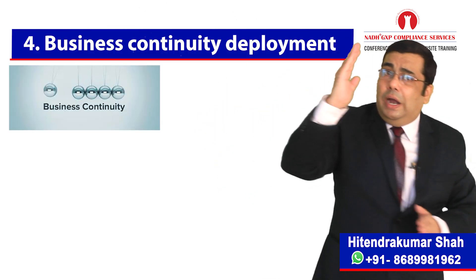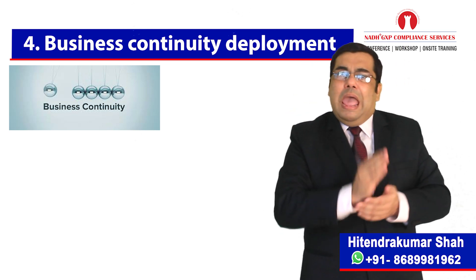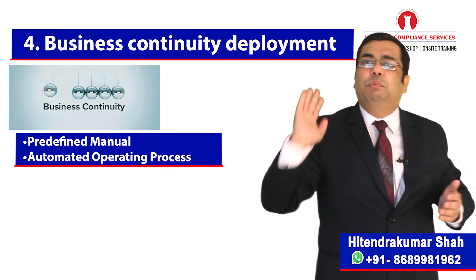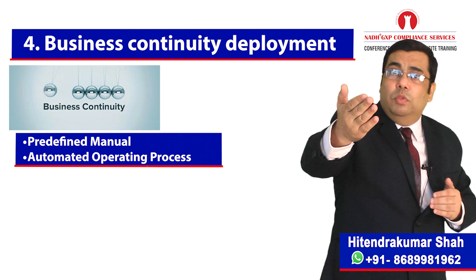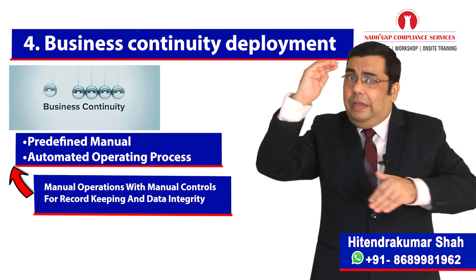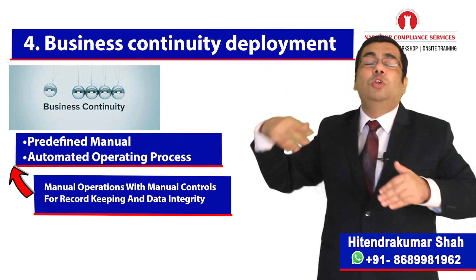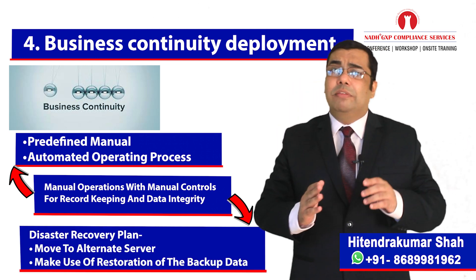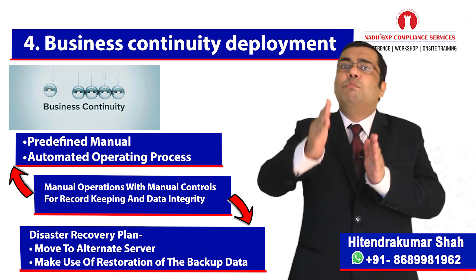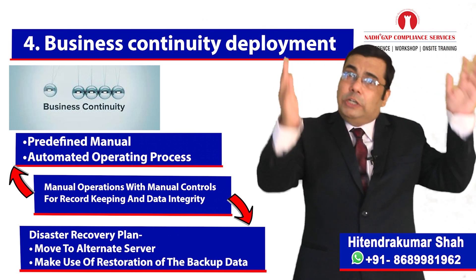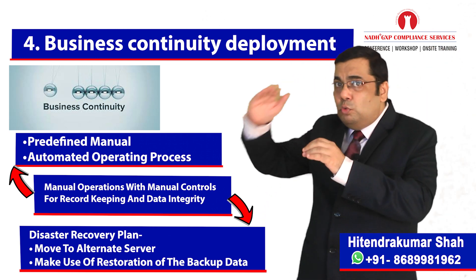The fourth element is business continuity deployment. Under this element, we have to consider activation of the predefined manual or automated operating process. For example, either we can have manual operations with manual controls for record keeping and data integrity, or we can make use of alternate systems. You can make use of a disaster recovery plan — for example, in case of server breakdown, we can move to an alternate server or restore backup data to ensure smooth business operations.